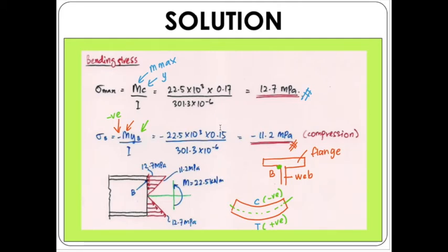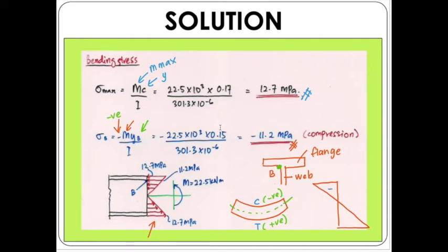We can now draw the stress distribution for the whole section. The stress block can be drawn with negative values on the left (top of beam) and positive values on the right (bottom of beam). The stress distribution follows a linear pattern, so we have only straight lines — negative at the top and positive at the bottom.